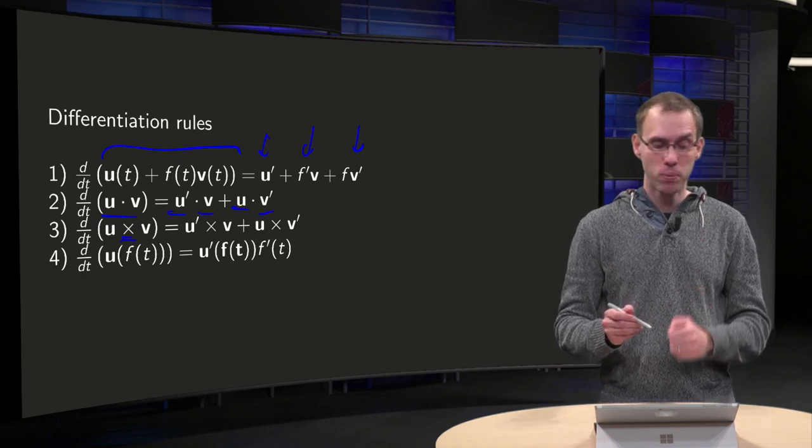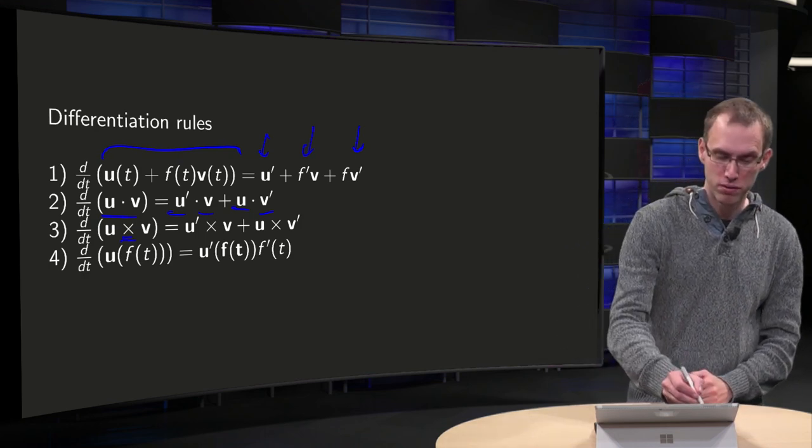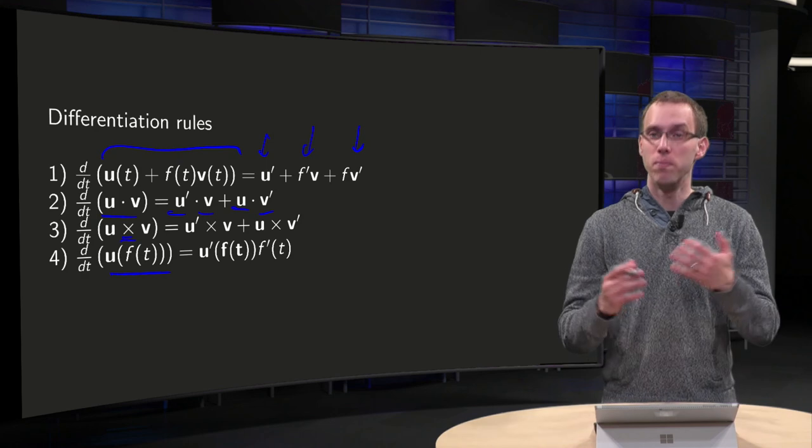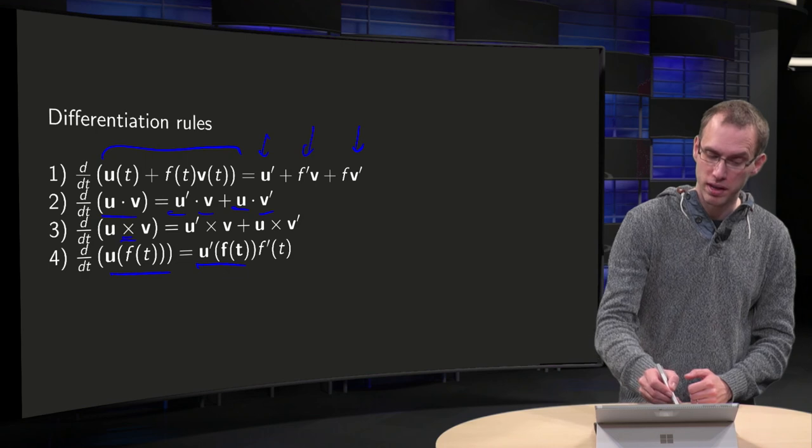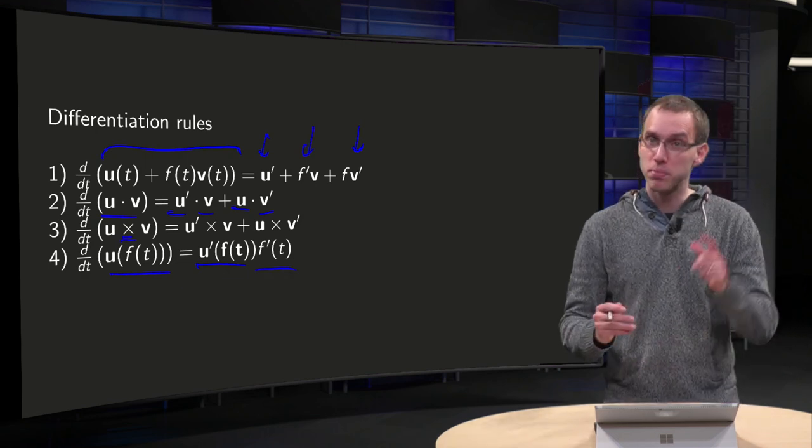And what about the chain rule? If you have d/dt of some composition, well, that works the same. You take the u prime and then you differentiate f prime with respect to t.